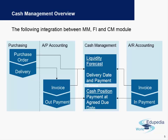How this integration exactly works is: when a purchase order is created and a delivery is made, the Accounts Payable department will post the invoice and make an outgoing payment. This outgoing payment then triggers the Cash Management module, where two main things are taken care of. First, whether the payment is made before or after the due date, which means whether it is affecting the payment terms agreed with the vendor.